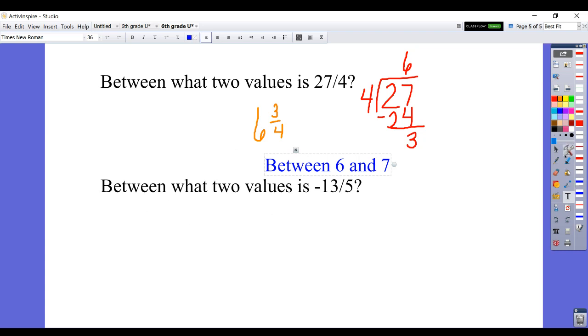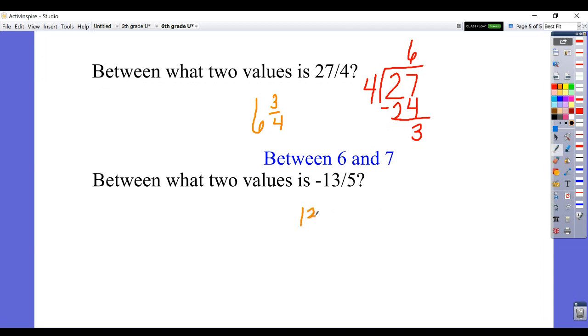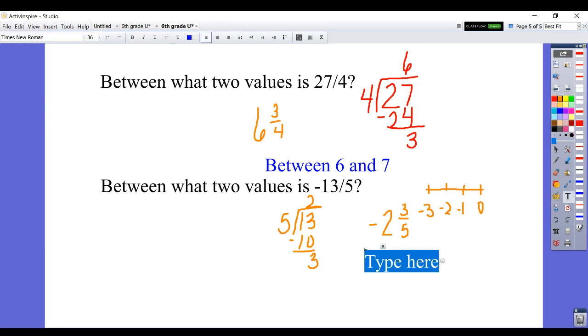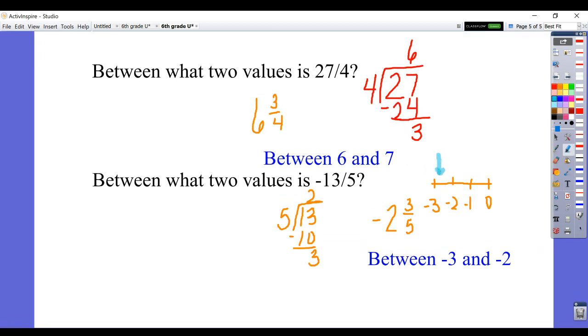And then between what two values is negative 13 fifths? Well, 13 divided by 5. We're not going to worry about the negative just yet. We'll deal with that in a second. But let's make it a mixed number first. So it goes in twice. So we get 2 and 3 fifths. But again, that's negative 2 and 3 fifths. So the question is, where is negative 2 and 3 fifths on a number line? Well, on a number line, here's your 0, 1, 2, 3. And of course, these are all negative to the left of 0. So it would be located about here. So we'd say between negative 3 and negative 2. Again, it would be located approximately there.